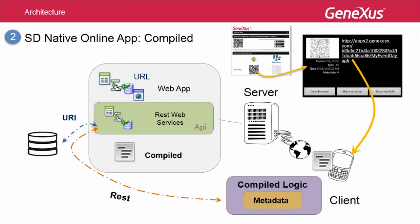To compile the application for Android, all we need is to indicate in the environment properties — such as the Ruby environment — the startup object. For example, in our case, the My Event Day dashboard. In this case, when we press F5, we will not generate the web application but rather the compiled application, which will be uploaded to the server. And that's why the developer menu web will not be opened. So, we will have to explicitly request GeneXus to open it through an option we will be seeing in the upcoming demo.